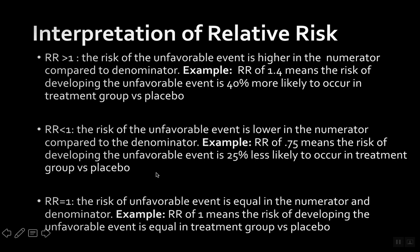When the relative risk is less than 1, the risk of an unfavorable event is lower in the numerator compared to the denominator. The smaller the number, the smaller the numerator is compared to the denominator. For example, a relative risk of 0.75 means that the risk of developing an unfavorable event is 25% less likely to occur in the treatment group versus placebo.